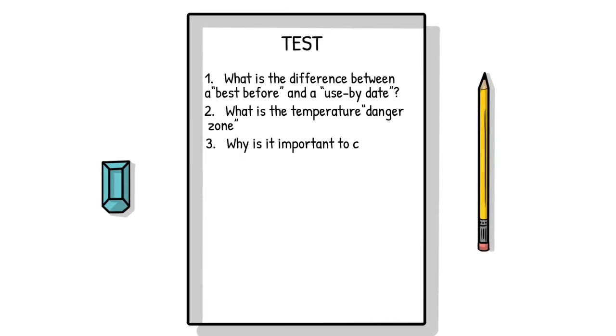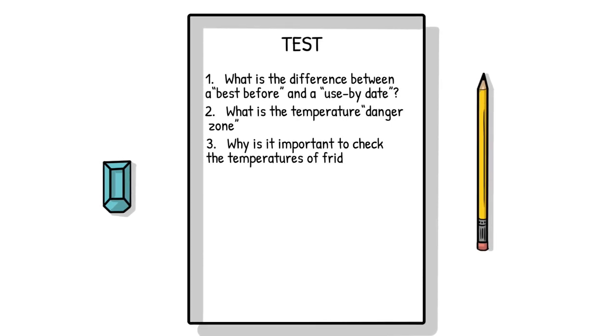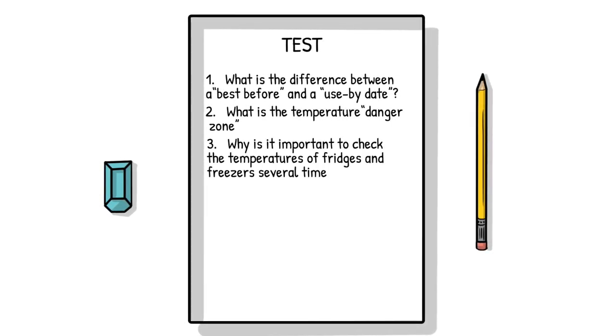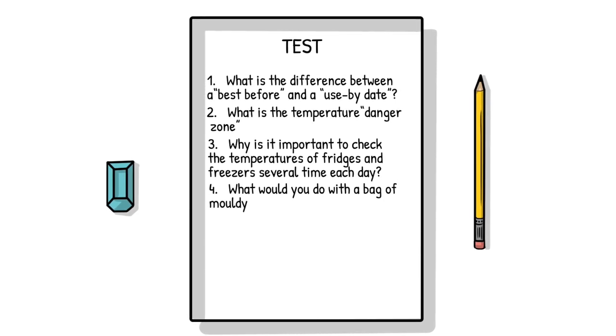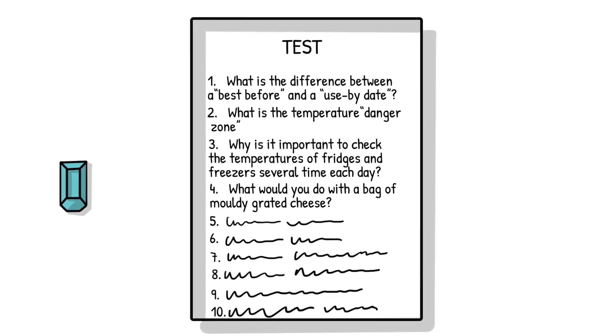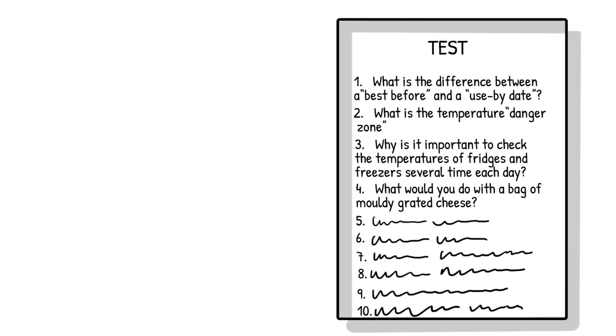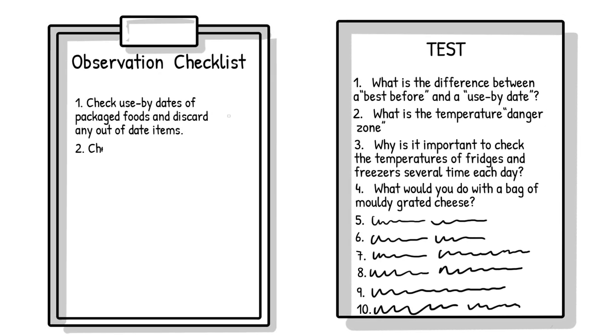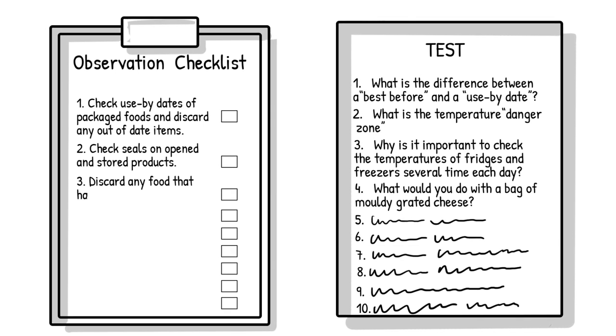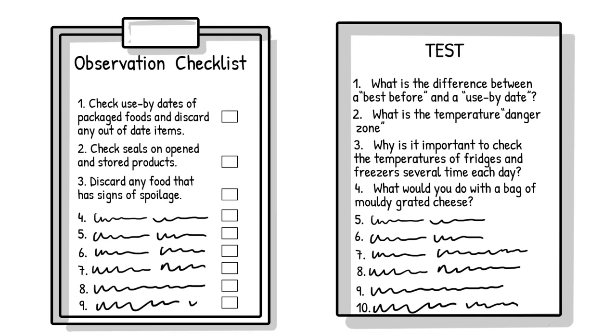3. Why is it important to check the temperatures of fridges and freezers several times each day? 4. What would you do with a bag of mouldy grated cheese? So, you can see that one appearingly simple performance criteria has resulted in at least three tasks that need to be observed and recorded on an observation checklist, and at least four questions for a knowledge test.